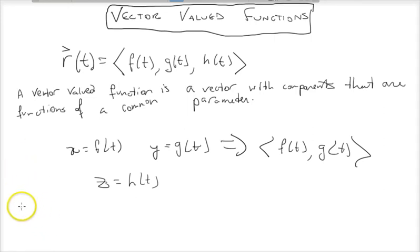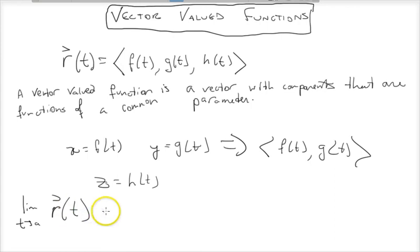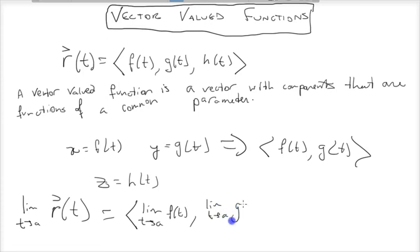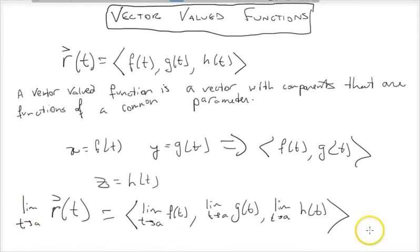Taking the limit of a vector-valued function is pretty easy. We take the limit as t, the parameter, approaches some value a, and taking the limit of the whole vector-valued function equals just the limit of each of the components: the limit as t approaches a of f of t, the limit as t approaches a of g of t, and the limit as t approaches a of h of t. As you can imagine, taking the derivative and integral will look something similar. But right now we're just going to get our bearings with vector-valued functions by doing a couple practice problems.